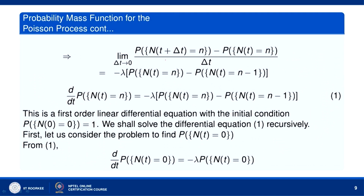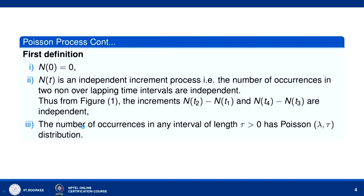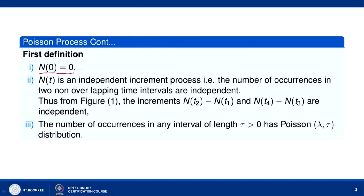This is a first-order linear differential equation, with the initial condition P(N(0) = 0) = 1, because we have the condition N(0) = 0. So the probability of N(0) = 0 is 1. Let us solve this differential equation by substituting n = 0 first.